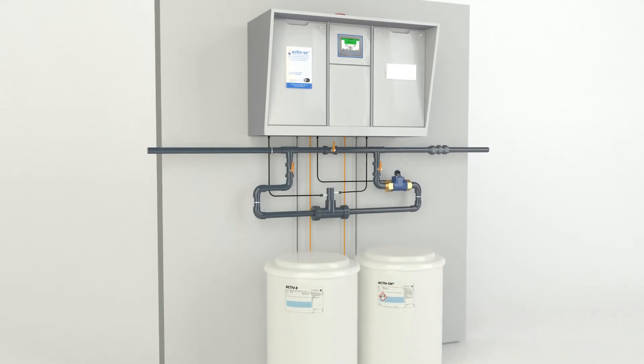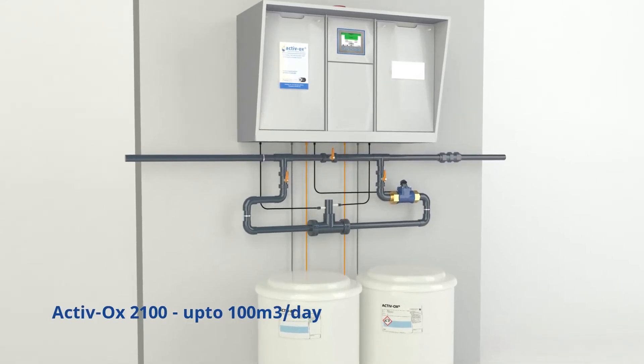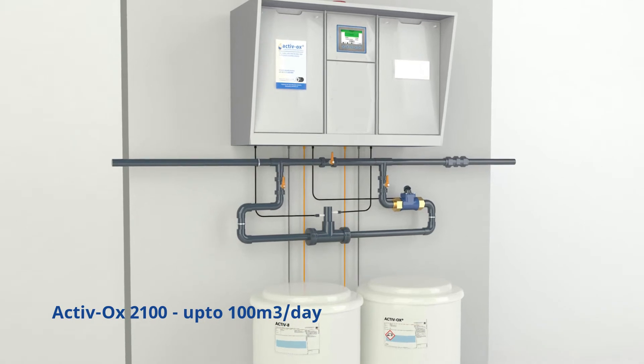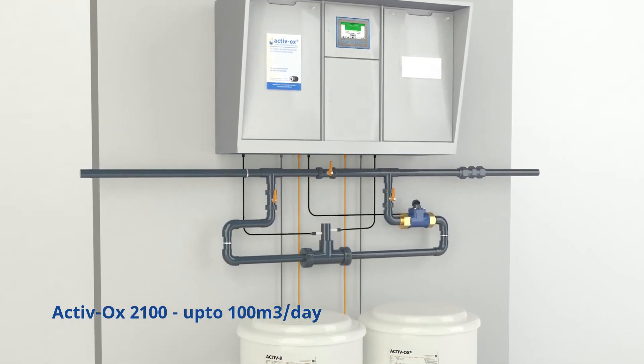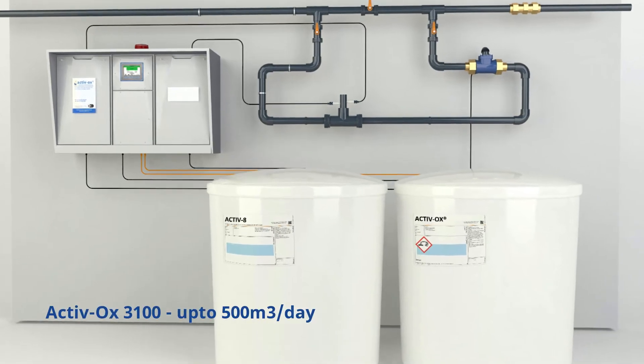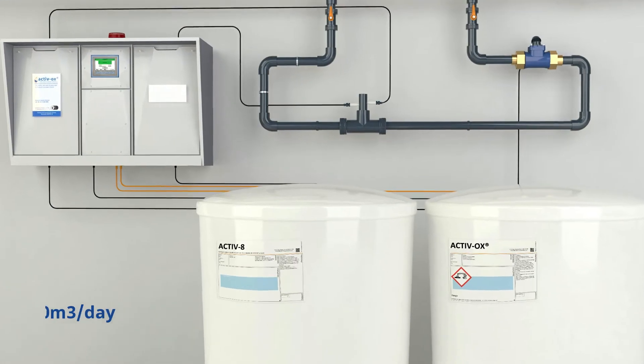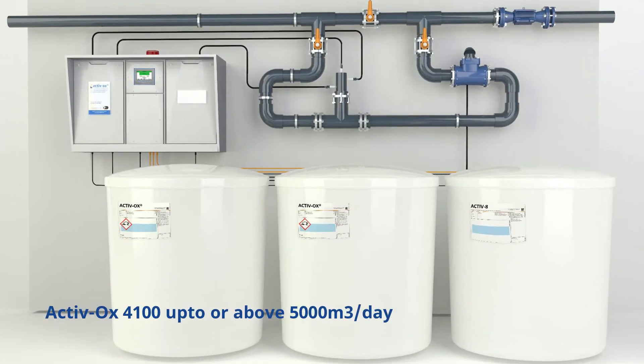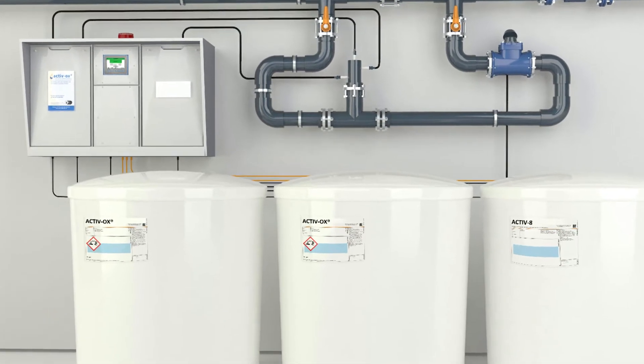The Activox system comes in three different models. The Activox 2100 eco-dosing system is designed for smaller applications treating from a few litres up to 100 cubic metres per day. For larger applications, the Activox 3100 Pro and Activox 4100 Multi have been engineered to treat applications up to or even exceeding 5,000 cubic metres of water per day.